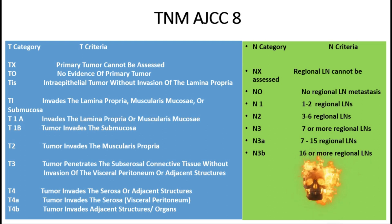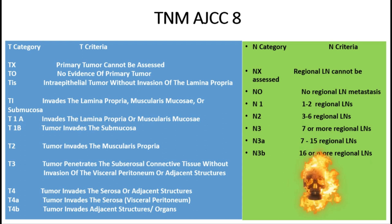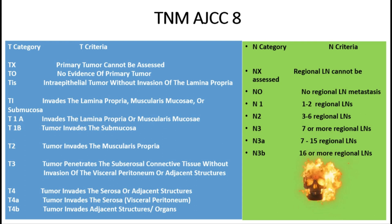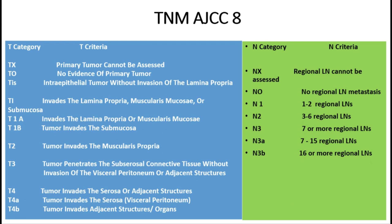T3 is tumor that penetrates the subserosa connective tissue without invasion of the visceral peritoneum or adjacent structures. T4A is tumor that invades the serosa — that is, it perforates the visceral peritoneum. T4B is tumor that invades adjacent structures or organs, specifically liver, diaphragm, small intestine, pancreas, and spleen.